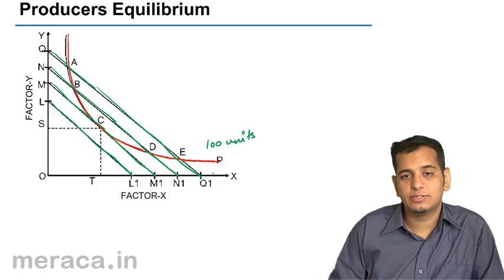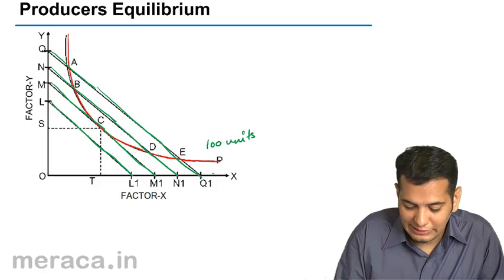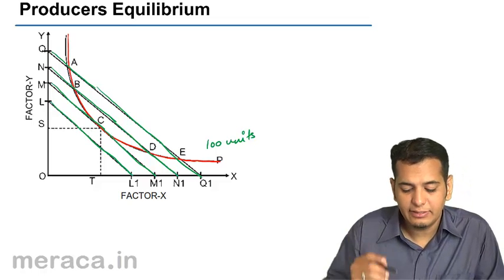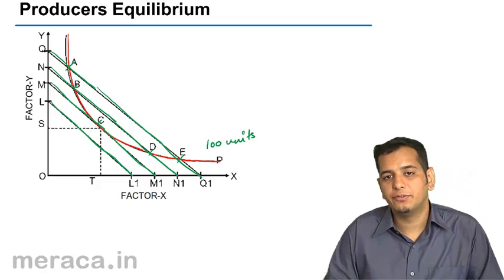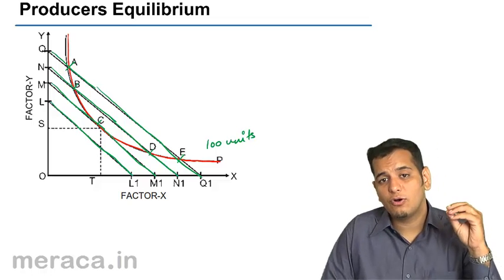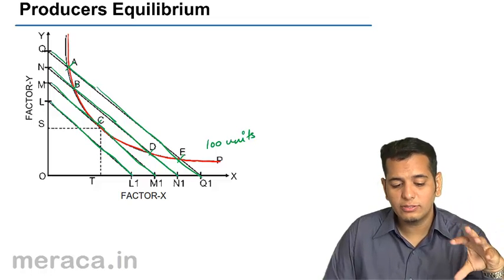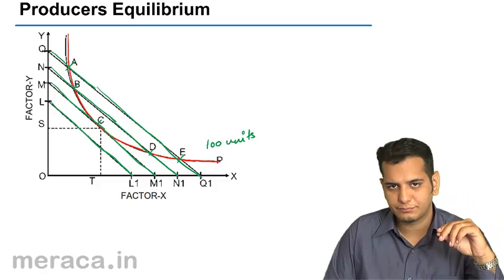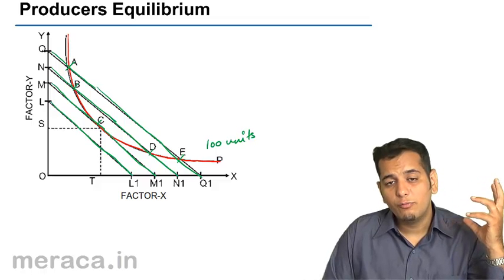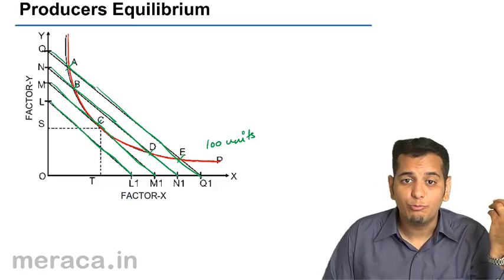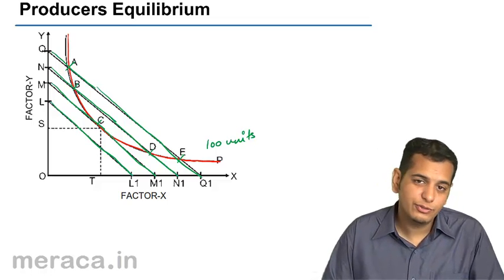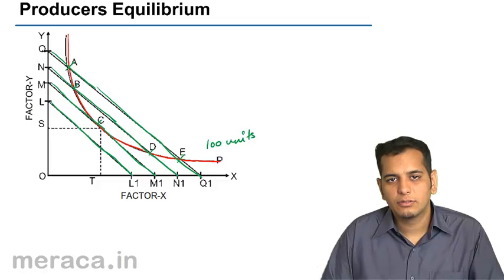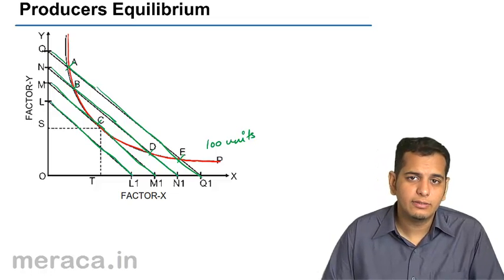At all the combinations given by P — that is A, B, C, D, and E — all combinations give this level of output, which is 100 units. However, the cost of producing 100 units at all these combinations is different. So which combination of factors of production will the producer choose? Will he choose A, B, C, D, or E? How does he choose?